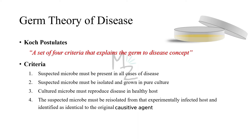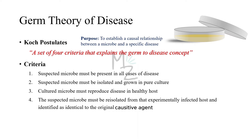Koch's postulates are a set of four criteria that explain the germ-to-disease concept. Their purpose is to establish a causal relationship between a microbe — the pathogen — and a specific disease, such as Bacillus anthracis being the microbe and anthrax being the specific disease.